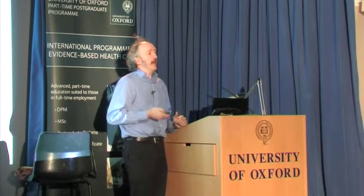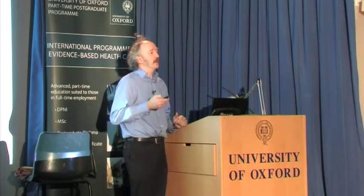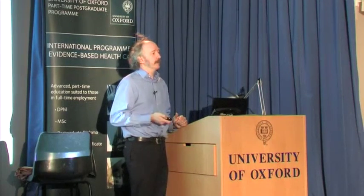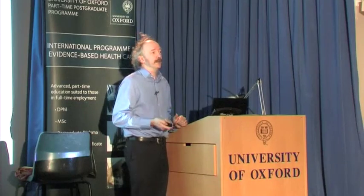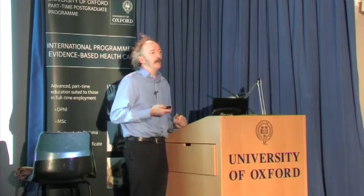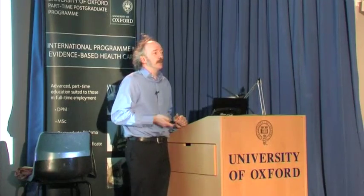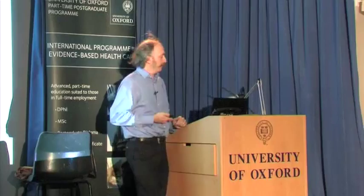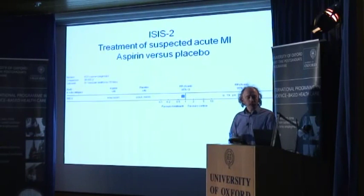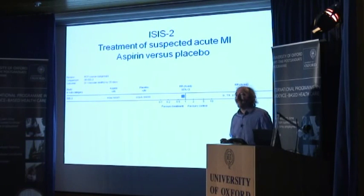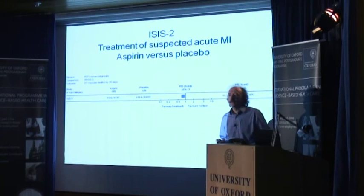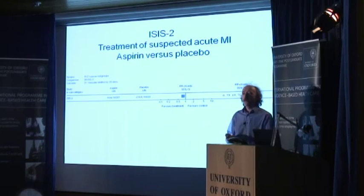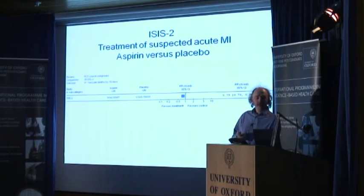So we want a rationale and we want the rationale to be convincing, because if the rationale is not convincing, maybe people will just dismiss our results anyway. So just to combine this idea of multiplicity and subgroups, let's move on to an example.